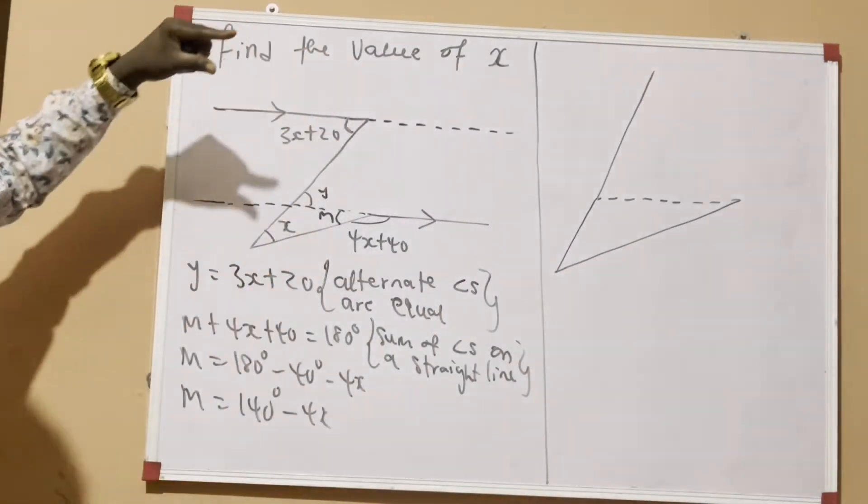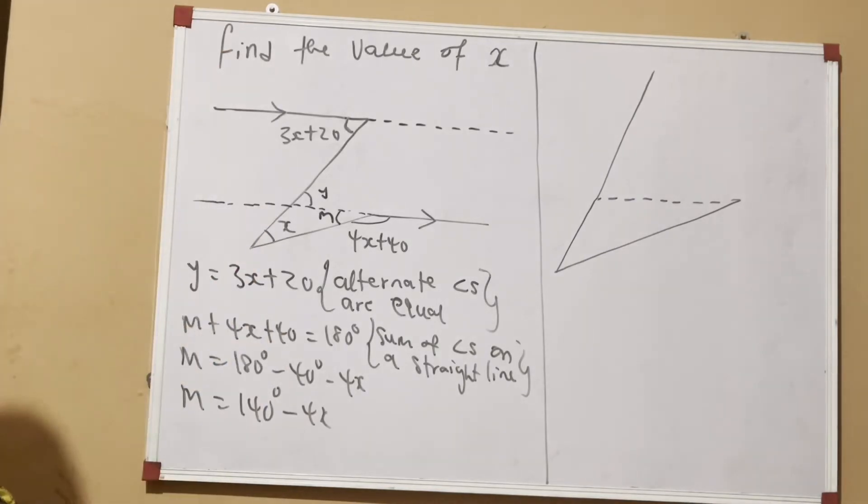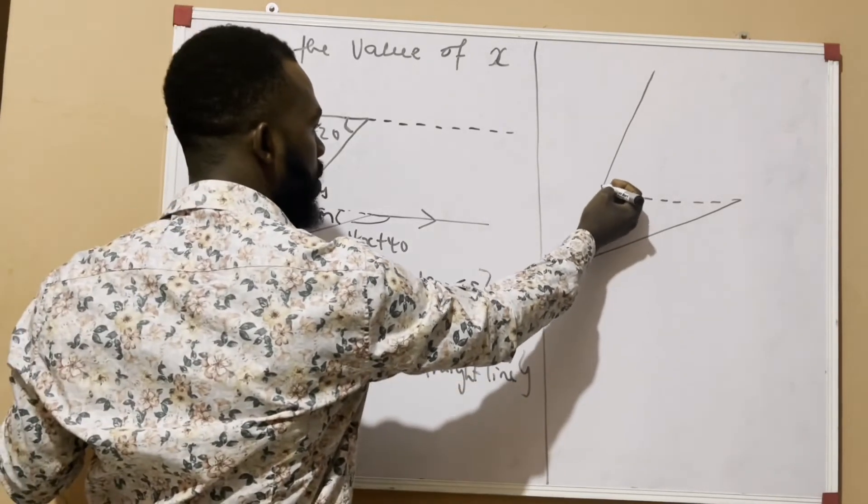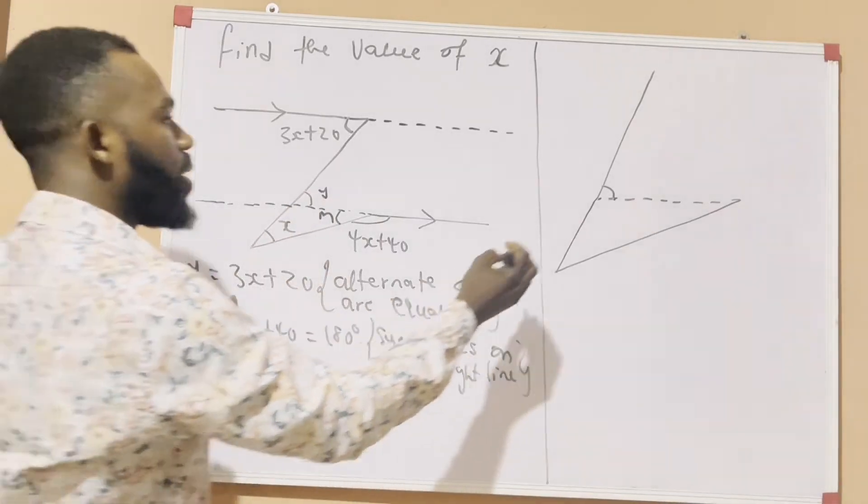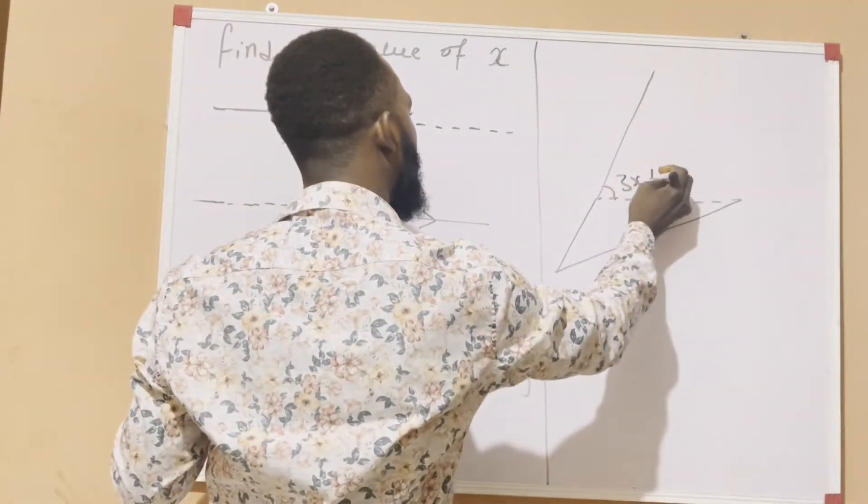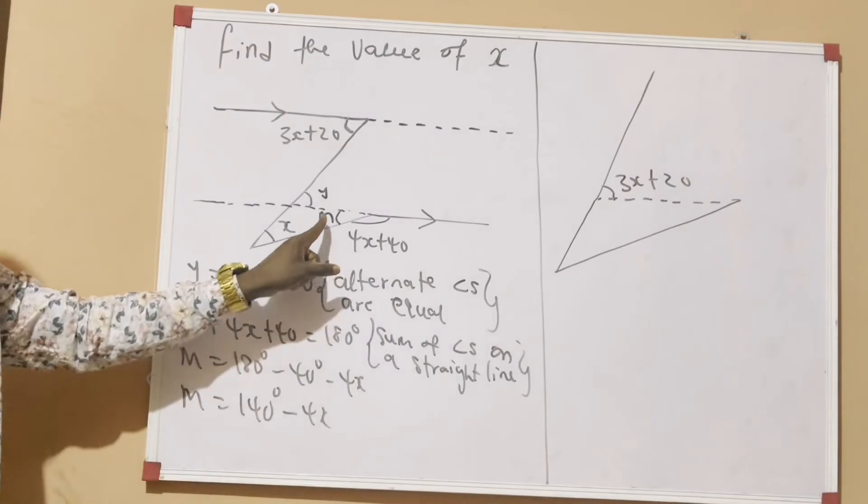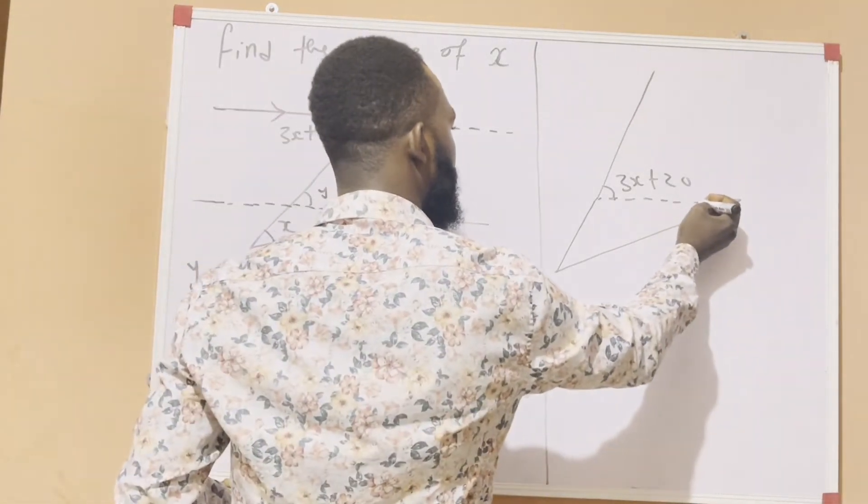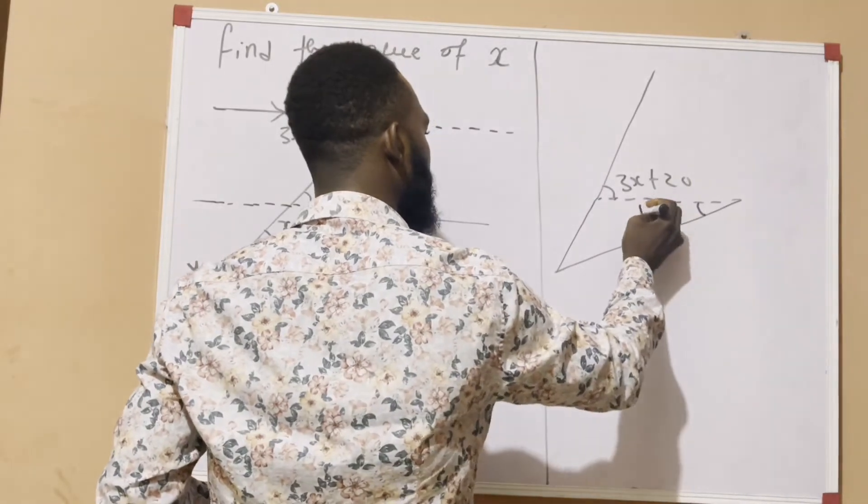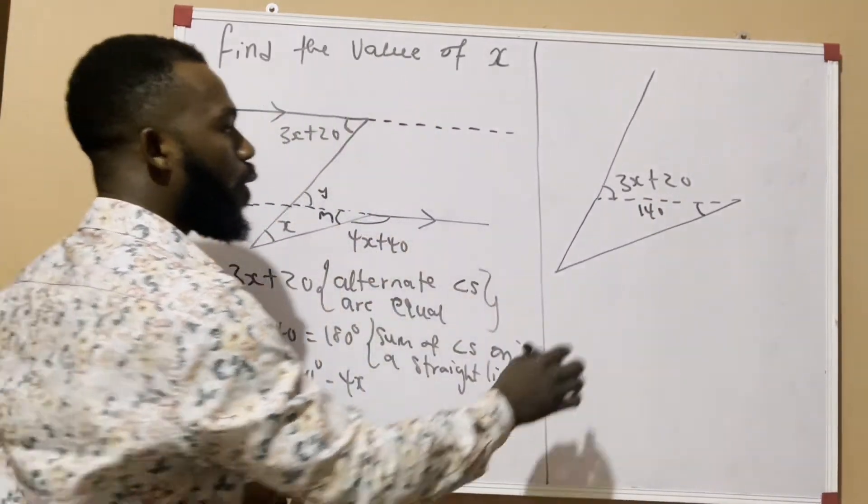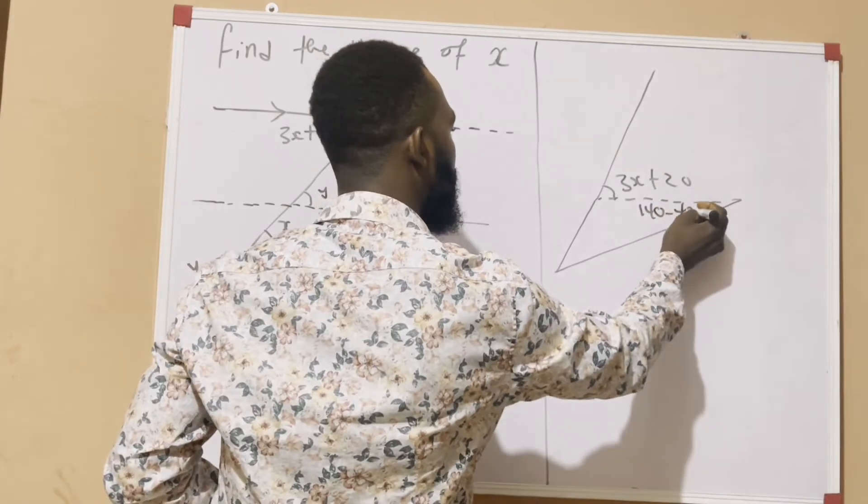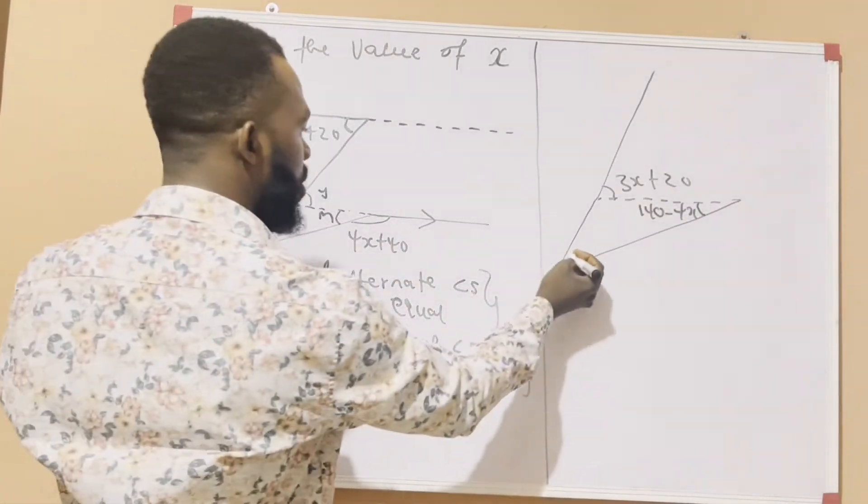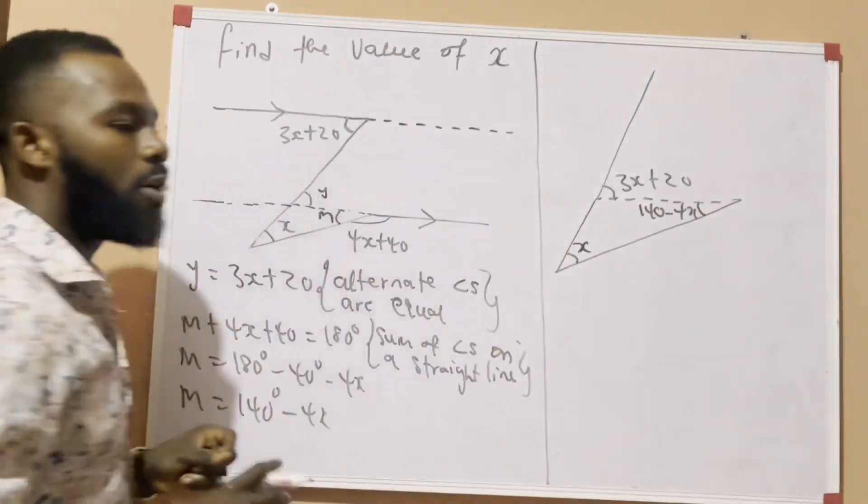Now, let's forget about the straight line. Now, we said here now is y. But what is y? 3x plus 20. And we said here is n. But what is n? 140 minus 4x. And then we said here is angle x.